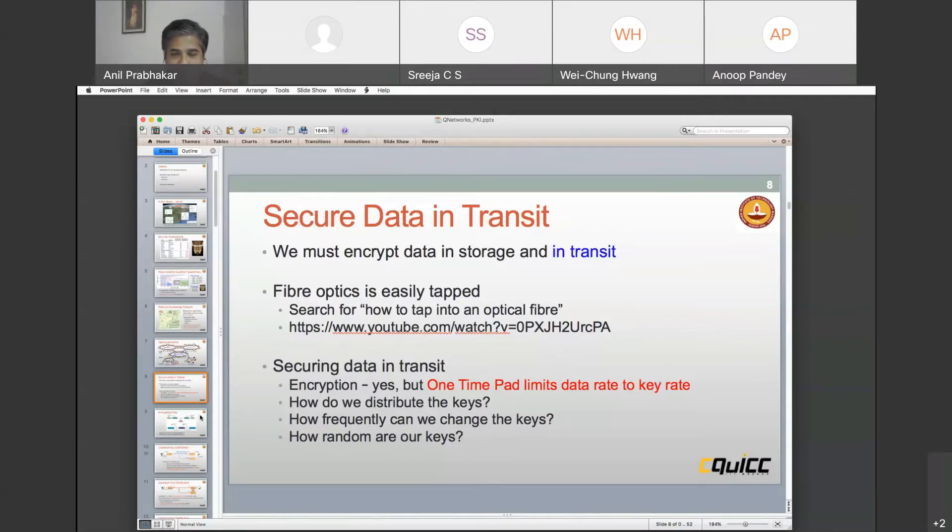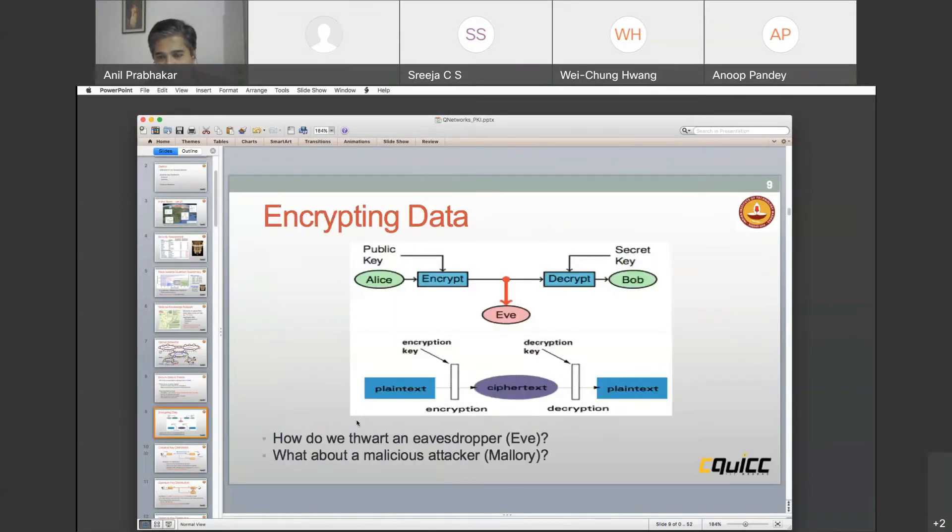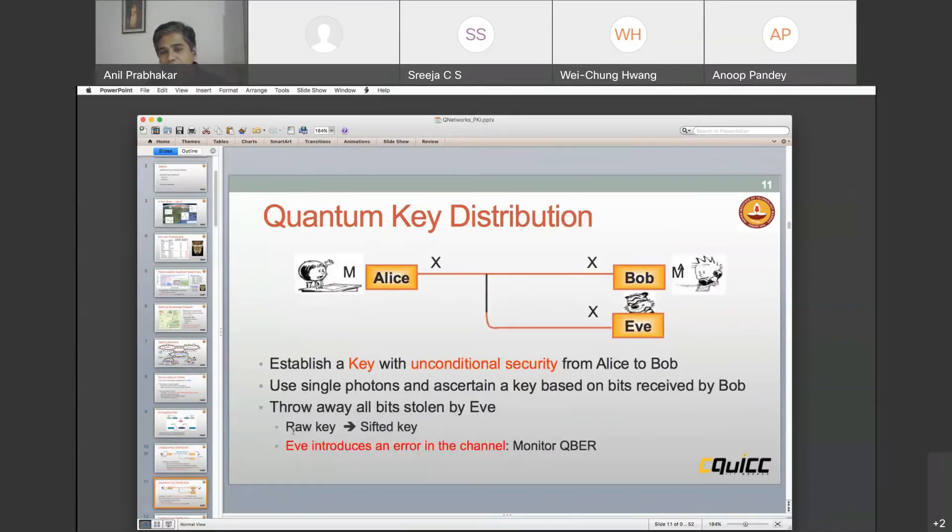What we are talking about is something that you probably heard a lot of today already: there is a public key and then there is a secret key. The two parties, Alice and Bob, are trying to transfer plain text after encryption called ciphertext between the two parties in the presence of some eavesdropper. We are trying to do this without the eavesdropper getting any information.